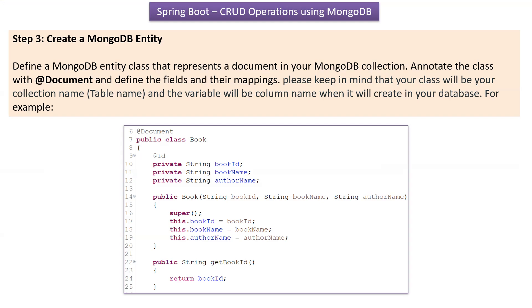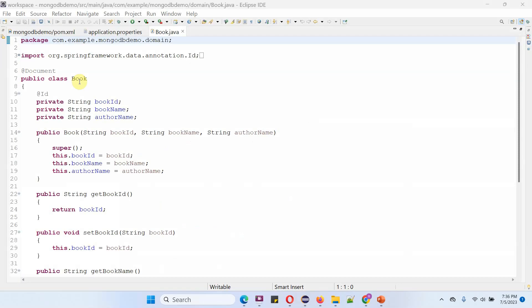Step three is to create a MongoDB entity. We have to define a MongoDB entity class that represents a document in the MongoDB collection. The class should be annotated with @Document and define the fields and their mappings. Keep in mind that the class name will be the collection name, and the variables will be the field names in the database. Here you can see the Book class, annotated with @Document, which has three attributes: bookId, bookName, and authorName.